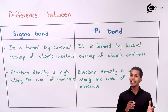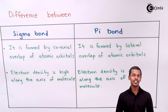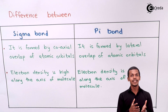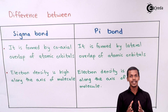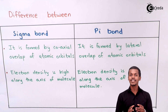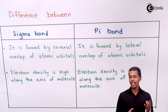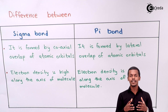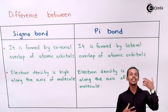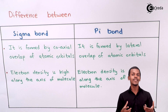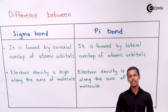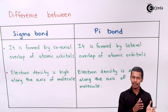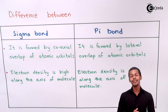Let me talk about the atomic orbital. We have discussed in our previous lecture that there are four main atomic orbitals: s orbital, p orbital, d orbital, and f orbital. During a combination of an atomic orbital with another atom's atomic orbital, if they combine, then only a bond will be formed. Bonds are of two types: the sigma bond and the pi bond.